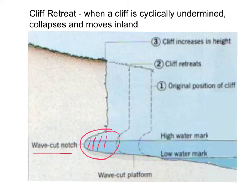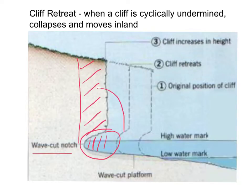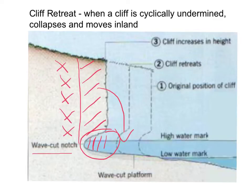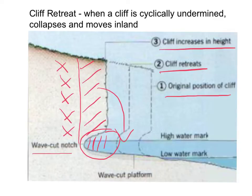The effect of taking away material from the bottom of the cliff is that the area above it will become much less stable. Eventually it will collapse into the sea, where it will be broken down further until it is small enough to be washed away. Once that's happened, the new part of the cliff is then vulnerable to further erosion and the process repeats itself. The diagram shows several positions of the former cliff line. Because the ground inland is rising, as erosion occurs and the cliff recedes, the cliff height actually increases.